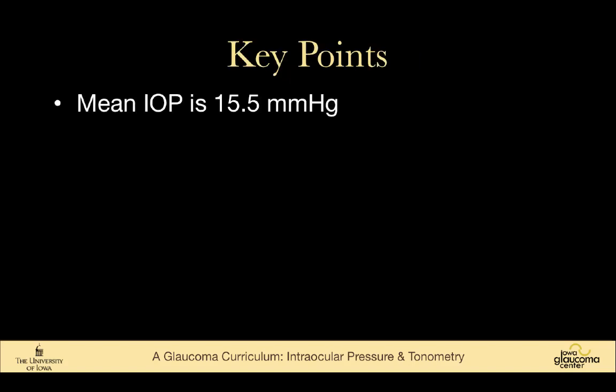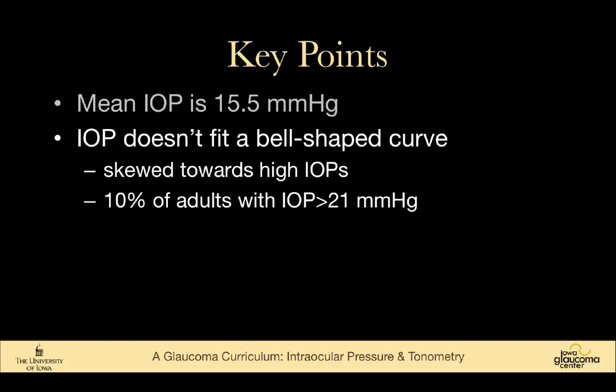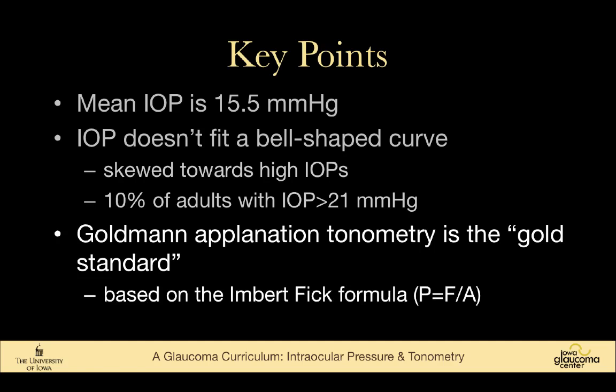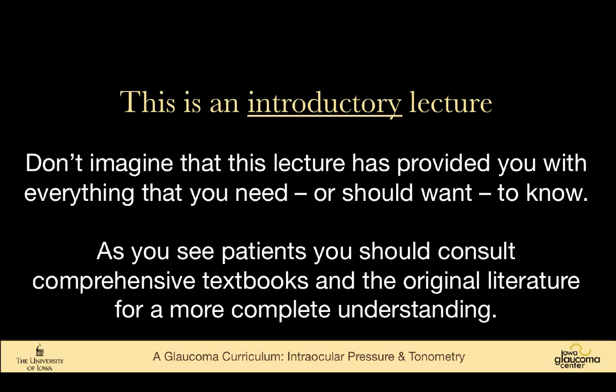The key points: mean intraocular pressure is 15.5 millimeters of mercury. The pressure does not fit a bell-shaped curve — it is skewed towards higher pressures, and 10% of adults have pressures over 21 millimeters of mercury. Goldman applanation tonometry is the gold standard, based on the Imbert-Fick formula, and applanates a diameter of 3.06 millimeters. This has been an overview of tonometry and the three types of tonometers most commonly encountered in practice.